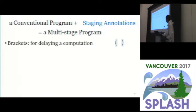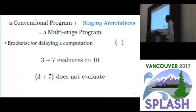So in MetaML we use staging annotations to turn a conventional program into a multi-stage program. We have three staging annotations. The first one is called brackets, which are for delaying computation. For example, we put this addition inside the brackets. It is a piece of code and doesn't evaluate.